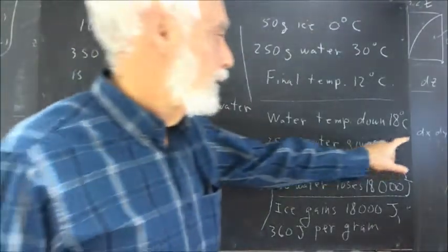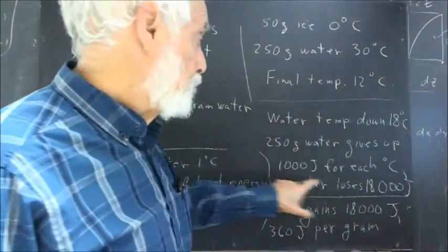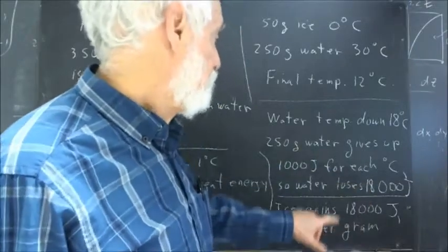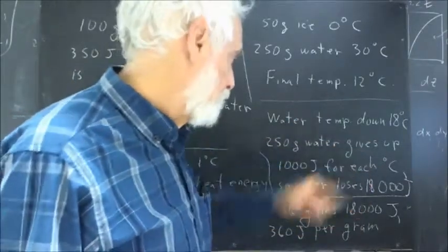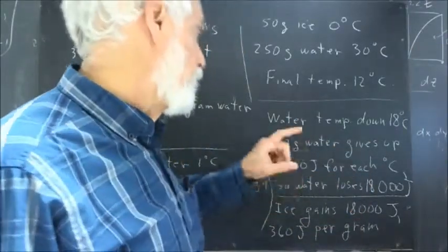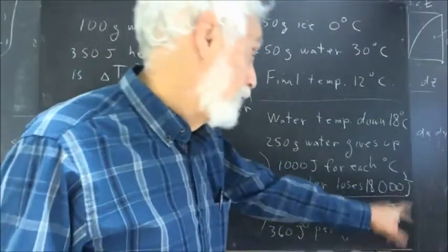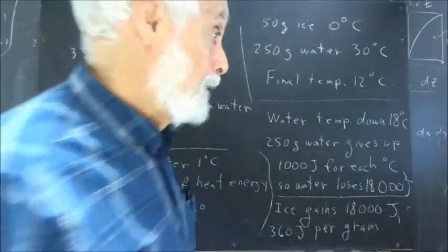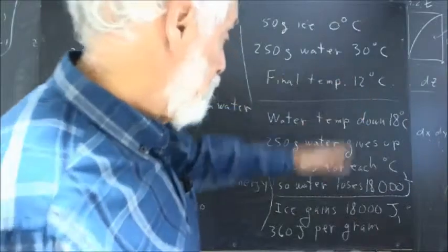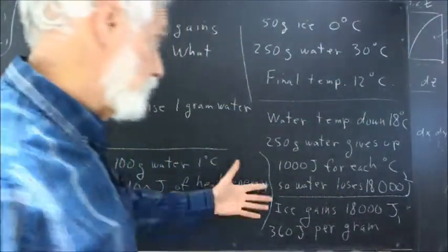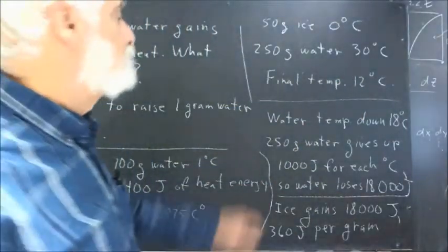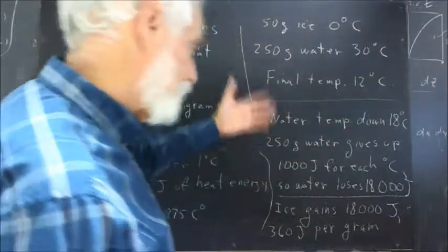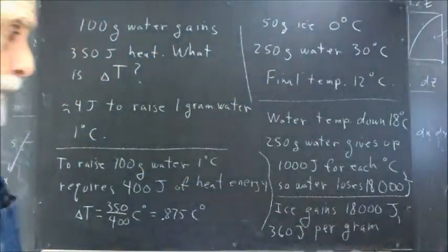250 grams of water, therefore, gives up 1,000 joules for each Celsius degree. Therefore, water loses 18,000 joules of energy. Okay, so that's very easy to conclude. The numbers are simple enough. You know, 4 times 250 is 1,000. You should understand that pretty easily.